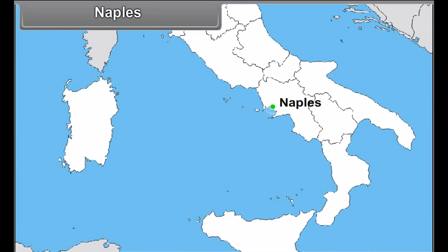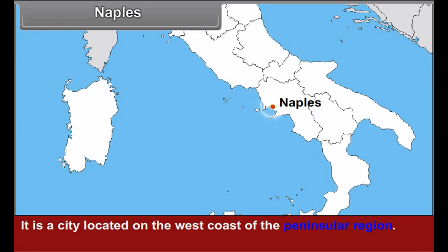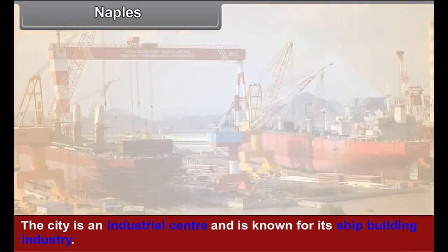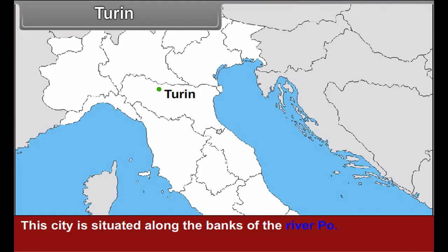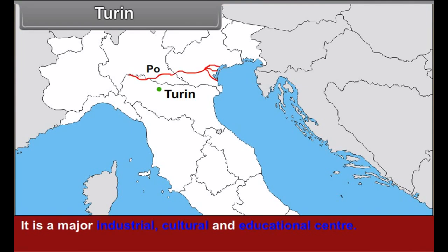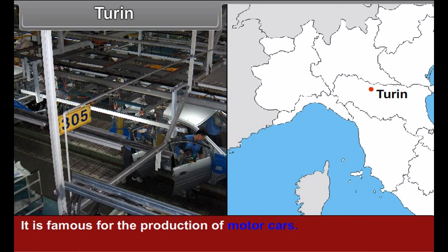Naples: it is a city located on the west coast of the peninsular region. The city is an industrial center known for its shipbuilding industry. Mount Vesuvius, an active volcano, is located close to the city. Turin: this city is situated along the banks of the river Po. It is a major industrial, cultural, and educational center, and is famous for the production of motor cars. It is also a major financial center.